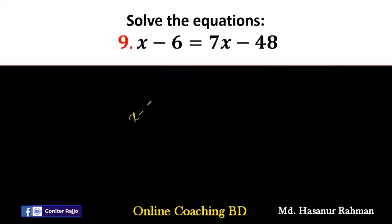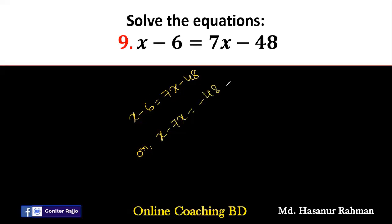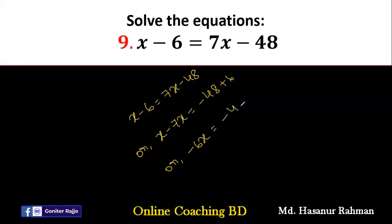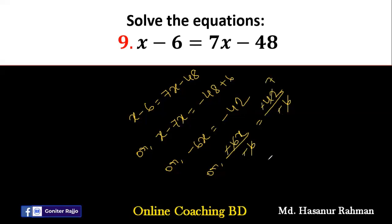Number 9 says x minus 6 equal to 7x minus 48. We rearrange: x minus 7x equal to minus 48 plus 6 (moving minus 6 to the other side gives plus 6). So x minus 7x is minus 6x, and minus 48 plus 6 is minus 42. Dividing both parts by minus 6: minus 6x divided by minus 6 and minus 42 divided by minus 6 gives x equal to 7.